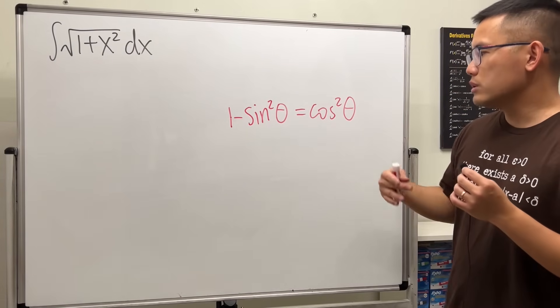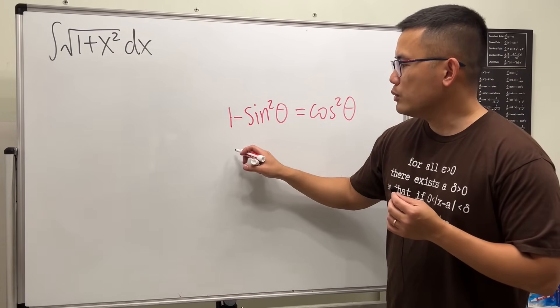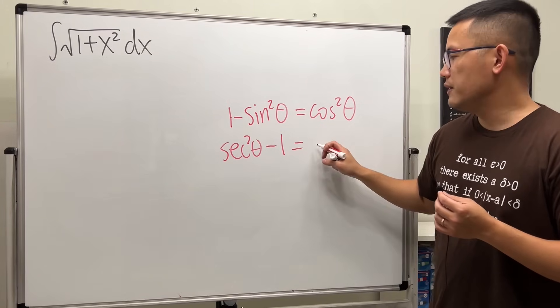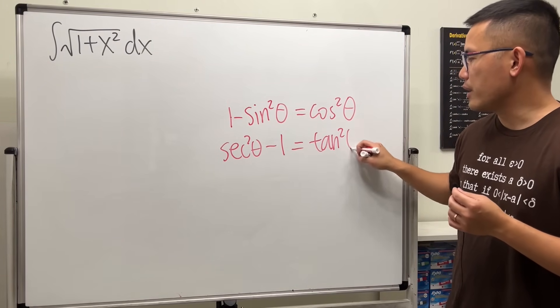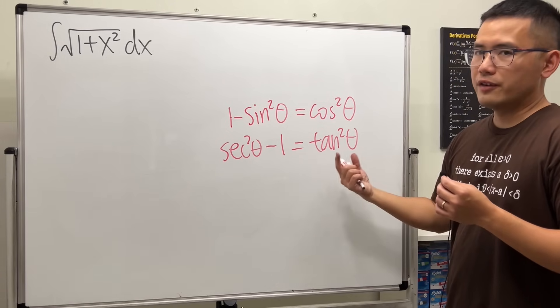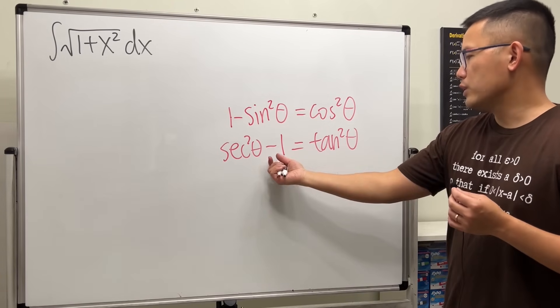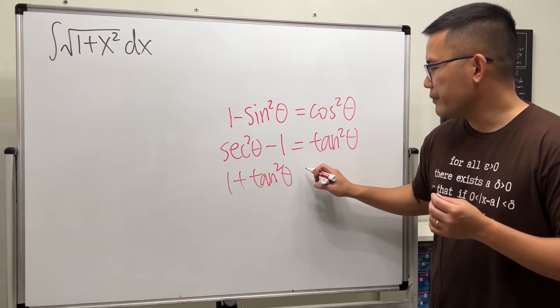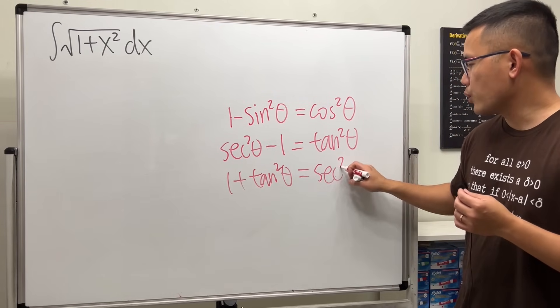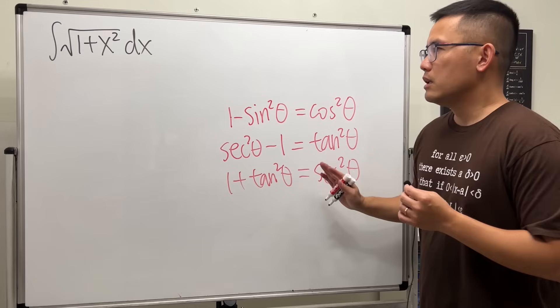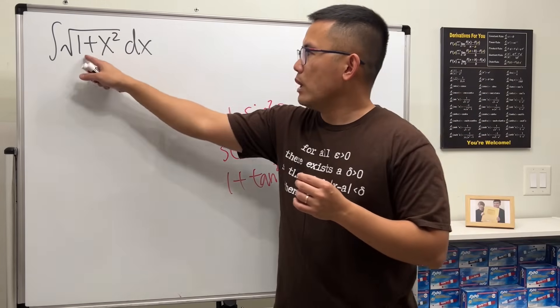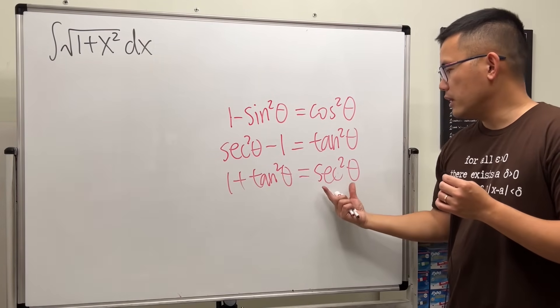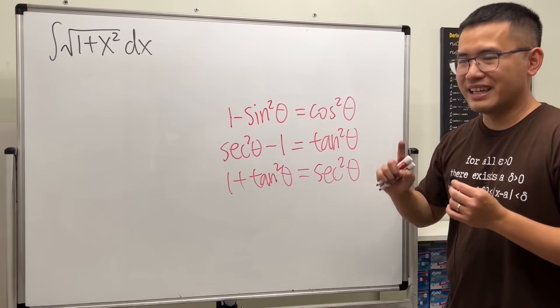And from here we can also derive the other ones. For example, we can also say if we have secant squared theta minus one, this actually gives us tangent squared theta. And from here we can also derive another one. For example, if I move the one to the other side, we can say 1 plus tangent squared theta will give us secant squared theta. And these are the three main ones. As you can see, we have one plus something squared, one plus something squared, and here we only end up with one term squared. Aha, that's the idea.